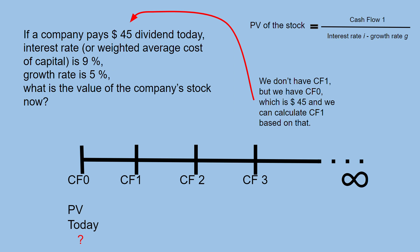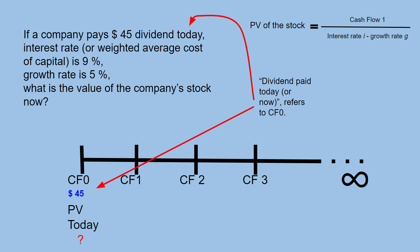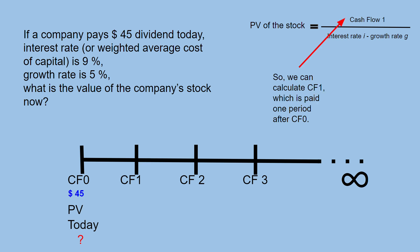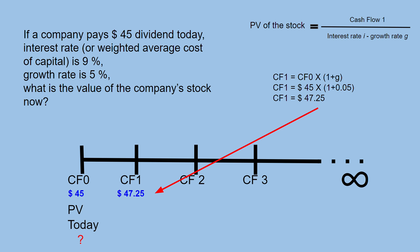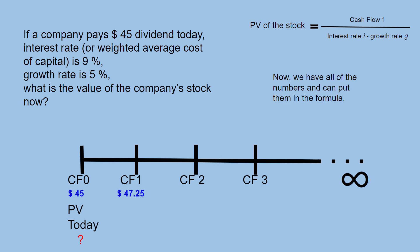So here's the formula. We don't have cash flow 1, but we have cash flow 0, which is $45. We can calculate cash flow 1, which is paid one period after cash flow 0. Cash flow 1 equals cash flow 0 times (1 plus G), which is 5% here, and we get cash flow 1. Now we have all of the numbers and we can put them in the formula.